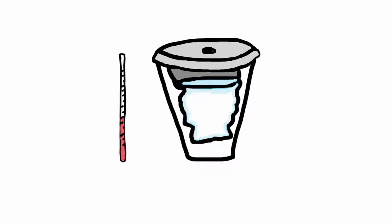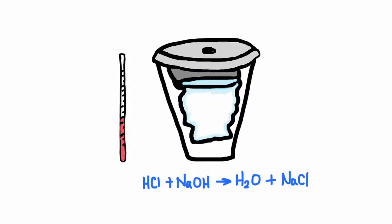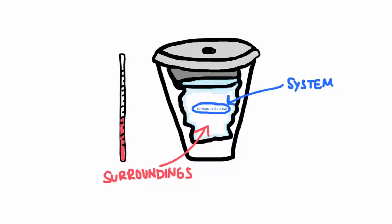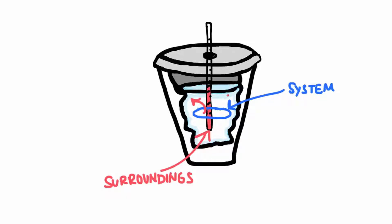When measuring the heat transferred during a chemical reaction, we're concerned with whether heat is going into or out of the system. The system is the actual chemical reaction — the chemicals reacting with each other — and the surroundings are the water around it. For example, if I dissolve hydrochloric acid and sodium hydroxide in water and let them react in the calorimeter, the reaction is the system and all the surrounding water is the surroundings. If the temperature of the water increases, heat exited the system into the surroundings. If the water temperature decreases, heat went from the surroundings into the system.